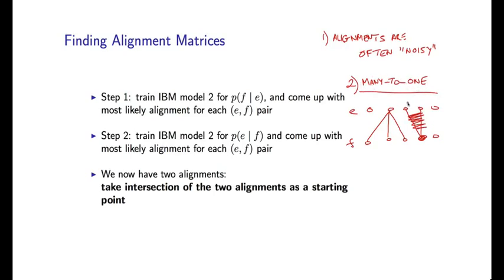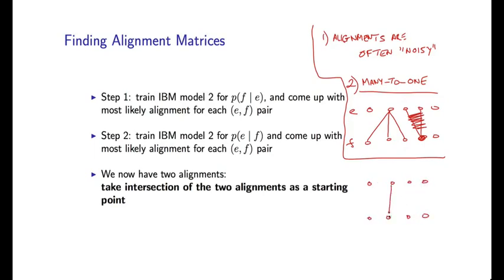So a number of heuristics have been developed to try to get around these kind of problems. Firstly, to try to make these alignments more robust and somehow reduce the noise. And secondly, to somehow get around this constraint that the alignments are many to one, and in particular to try to move to alignments which are many to many. So we might, for example, have alignments where some foreign words are aligned to multiple English words, and similarly some English words are aligned to multiple French words.